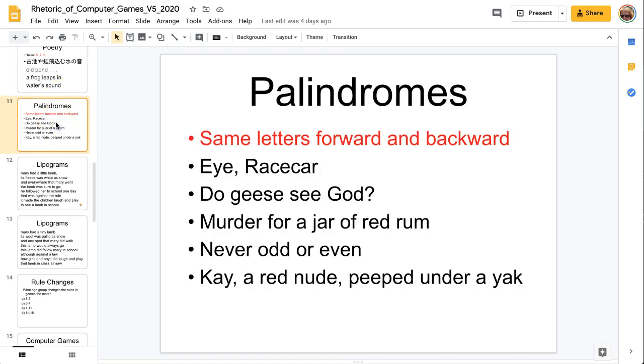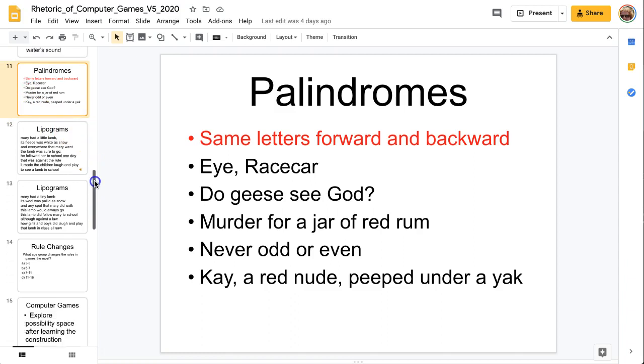Now palindromes, for example, are words that have the same letters forwards and backwards. For example, the letter I or the word eye, and the word racecar begins with an R and ends with an R. You can even have sentences like 'do geese see God' and 'murder for a jar of red rum.' If you reverse the order, it still remains the same. So it's a very interesting one to look at, palindromes, which is a kind of constraint on language.